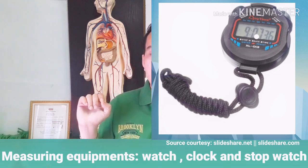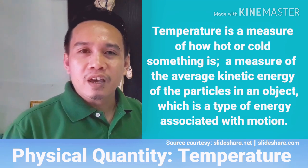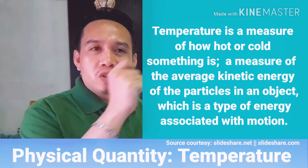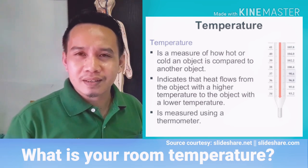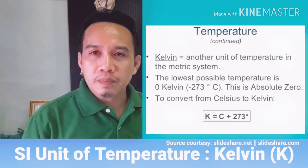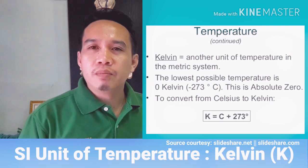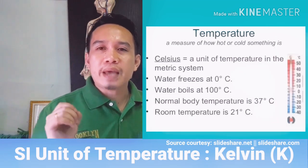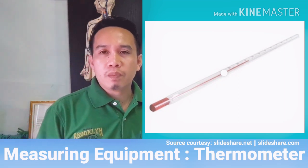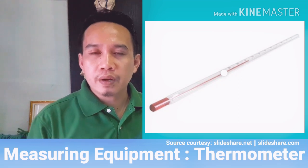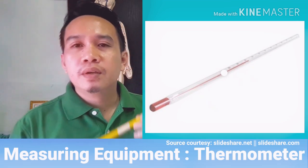Temperature is also important. Every time we enter a mall, someone checks our body temperature. We often hear the unit degrees Celsius, but the standard SI unit for temperature is Kelvin. The measuring instrument used to check body temperature, room temperature, or weather temperature is the thermometer.